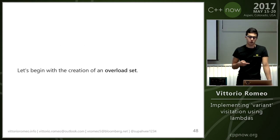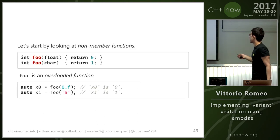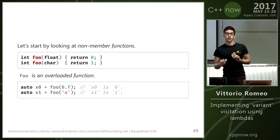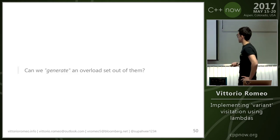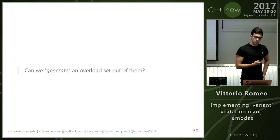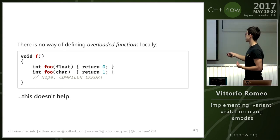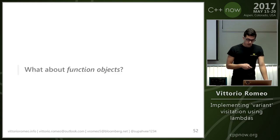We can now dive into the implementation. match will be a function that takes N variants and returns another function that takes N function objects. To create a visitor from the lambdas we pass, we need to build an overload set from them, then call std::visit with the variants and the newly built overload set. The first step is figuring out how to create an overload set. We can look at non-member functions first: you can overload foo taking a float and a char, and calling foo with different types calls different functions. But we immediately hit a roadblock — we cannot define functions inside other functions.